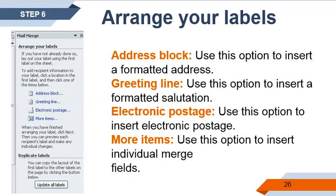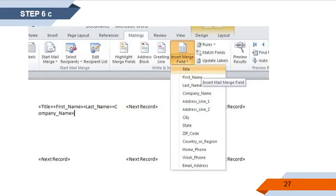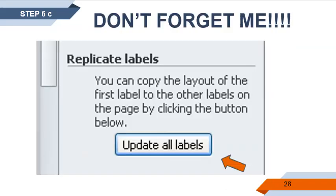Step six, arranging your labels. Address Block — use this option to insert a formatted address. Greeting Line — use this option to insert a formatted salutation. Electronic Postage — use this option to insert electronic postage. More Options — use this option to insert individual merge fields. This is how it looks like on your document. Simply insert the merge field that you want on your form document and arrange it accordingly on how you want it to be seen. Then do not forget to click Update All Labels.